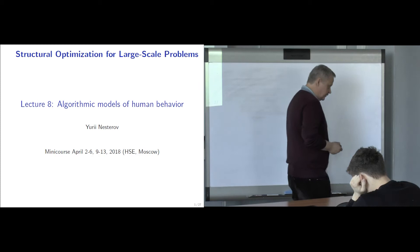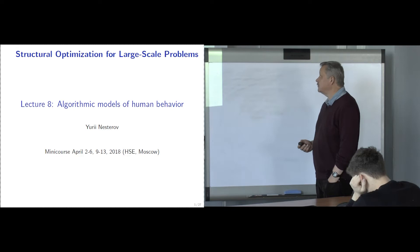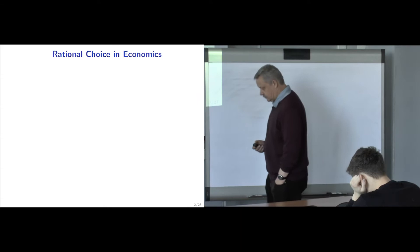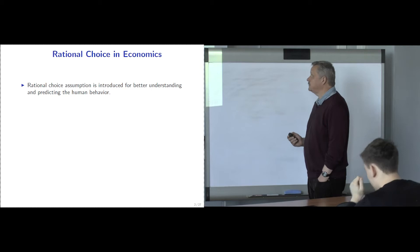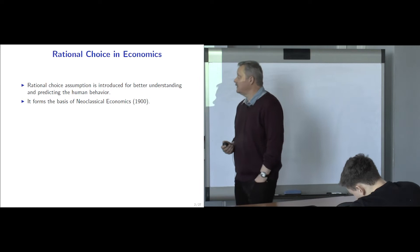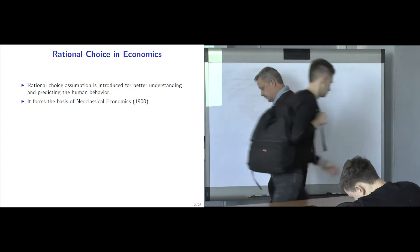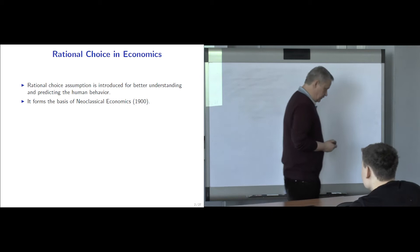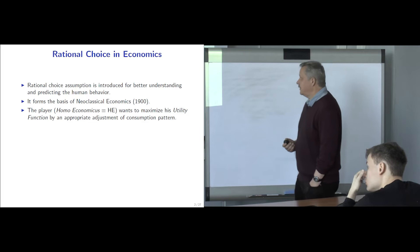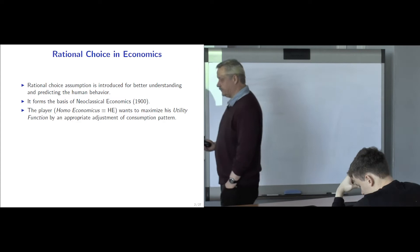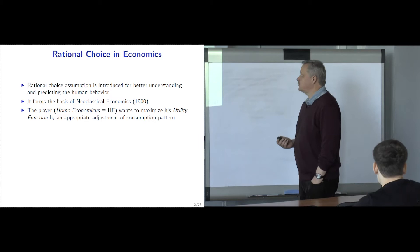Let us start our last lecture of this course. The topic of this lecture is not very standard — it is the algorithmic model of human behavior. The reason we are speaking about this is the concept of rational choice in economic theory. Rational choice is very important because it helps to understand and predict the results of human behavior, and it forms the basis of neoclassical economics, developed starting from the beginning of the 19th to 20th century. The main agent of this theory is the so-called homo economicus.